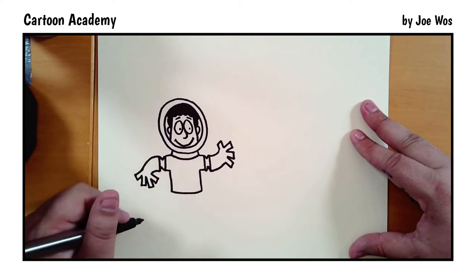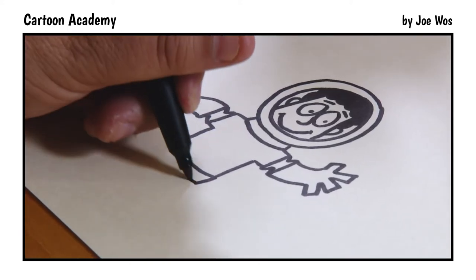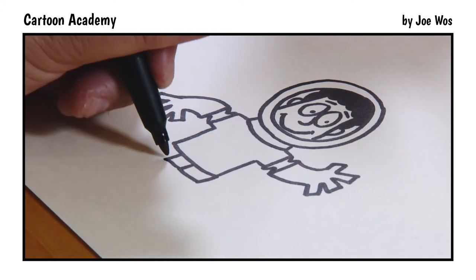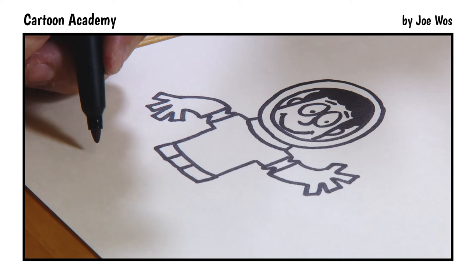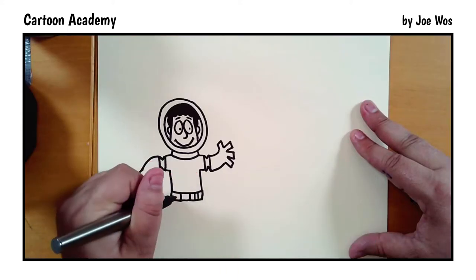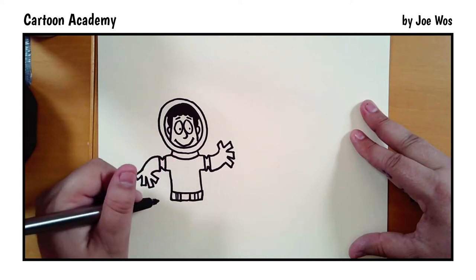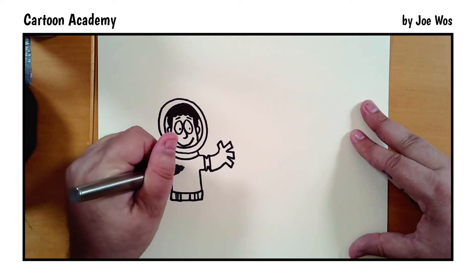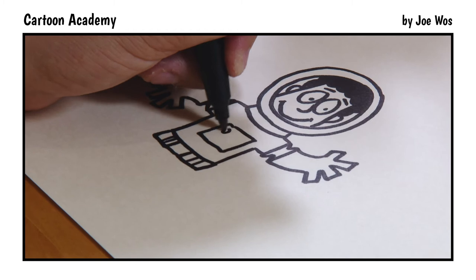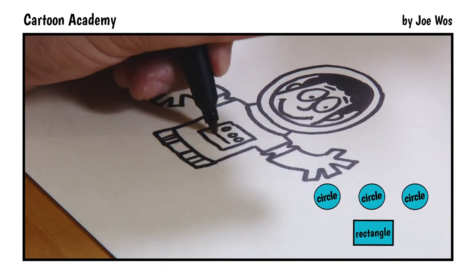We have a belt going across the waist. Line down, over, square, over, and up. So it's rectangle, square, rectangle. And then there's a couple of quick lines here and there. On the chest plate, we're going to add a little control box. Square. Circle, circle, circle. And a rectangle.